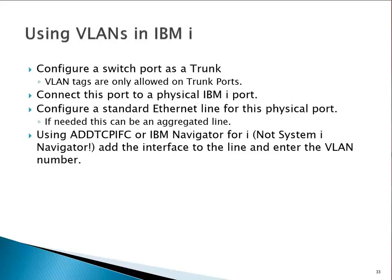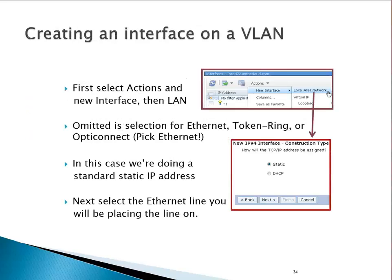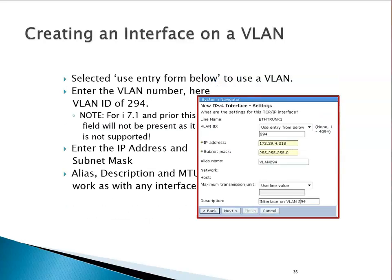You add the interface to the line and enter a VLAN number. So here's how that looks: we create a new interface, give it a static address. You can see we're using ETH-TRUNK1 as the line description, and in this case VLAN number 294, with an IP address of 172.294.218. And then there's the alias name — in this case VLAN 294. That's how you specify a VLAN if you have the need to do so.